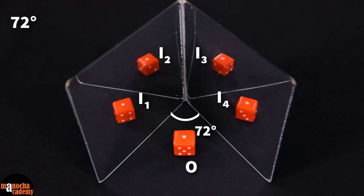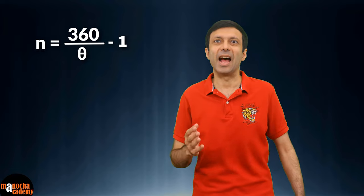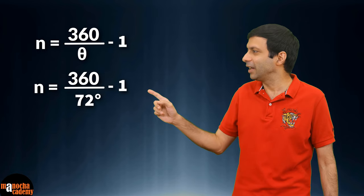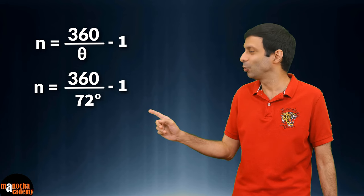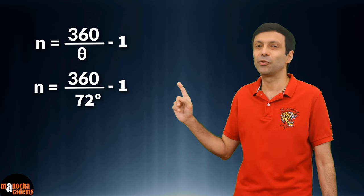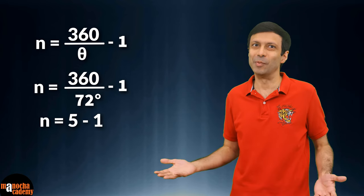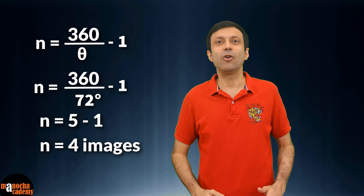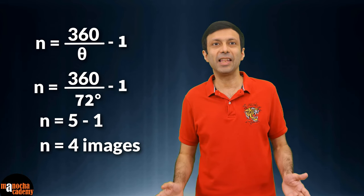Now let's decrease the angle between the two mirrors to 72 degrees. You can see 4 images of the dice are formed. Plugging 72 degrees into our formula: n = 360 ÷ 72 − 1 = 5 − 1 = 4 images — exactly what we saw in the two mirrors.